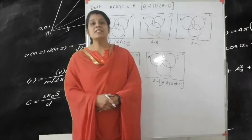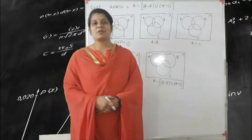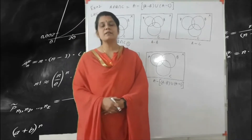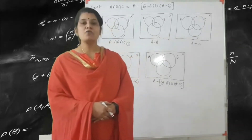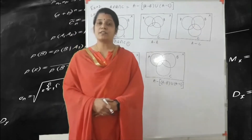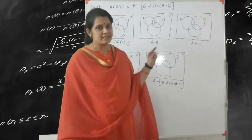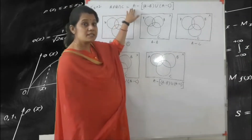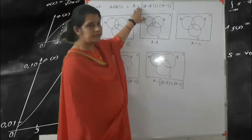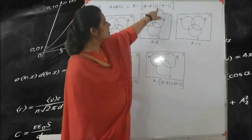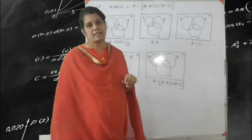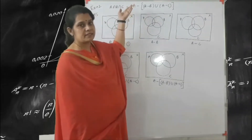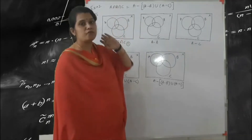Hello, good morning everyone. Today I am going to talk on a lecture on chapter number 1, SAP CURY. We have already seen in our previous lecture how we use the Venn diagram according to set theory. So this last example is: A intersection B intersection C is equal to A minus B union A minus C. We will solve this question with the help of a Venn diagram.